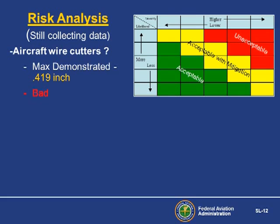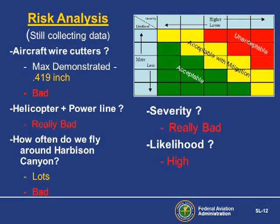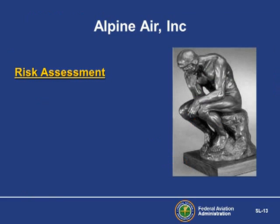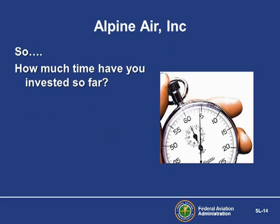You find the operator's manual for the wire cutters on your helicopter and find that the maximum demonstrated cutting capacity is .419 inch. That's bad. You think about what happens when a helicopter and a power line interact. That's really bad. You already know how often you fly through Harbison Canyon – and that's a lot. So what is your severity and likelihood for this hazard? Now it's time for the risk assessment. Is the risk acceptable or unacceptable? Looking at your data, this is pretty simple – your risk is unacceptable.